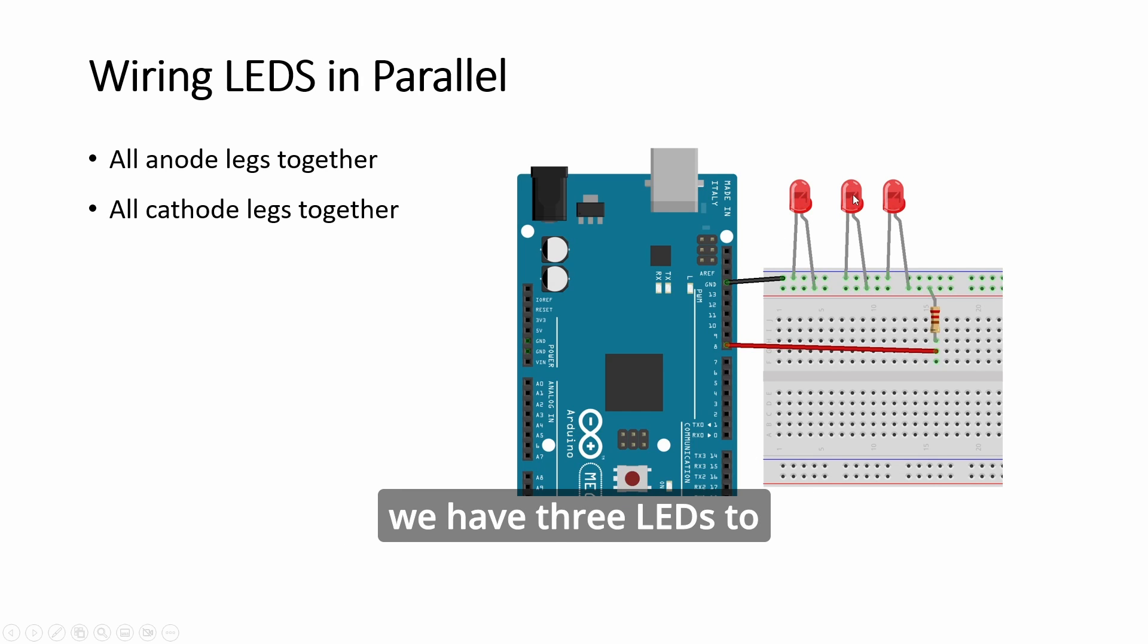So in terms of wiring since we have three LEDs to help spread the light, for three or more LEDs you need to do in parallel and not series. So all the cathode together, all the anode together.